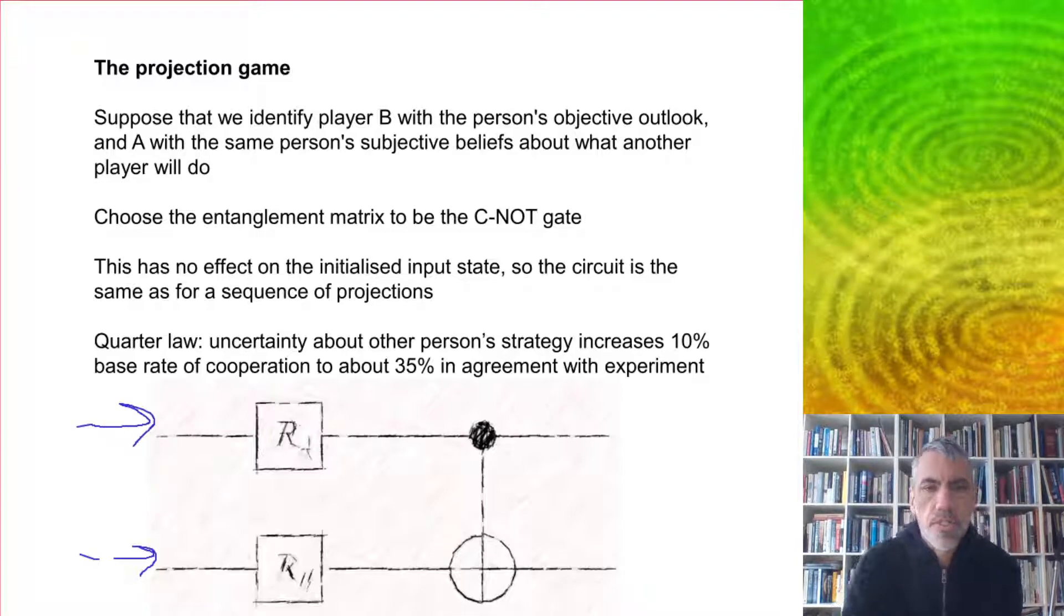They're going to have these subjective beliefs about what the other person's going to do, and their response, their decision, is going to depend on what they're thinking about the other person. These beliefs are going to act as a control.